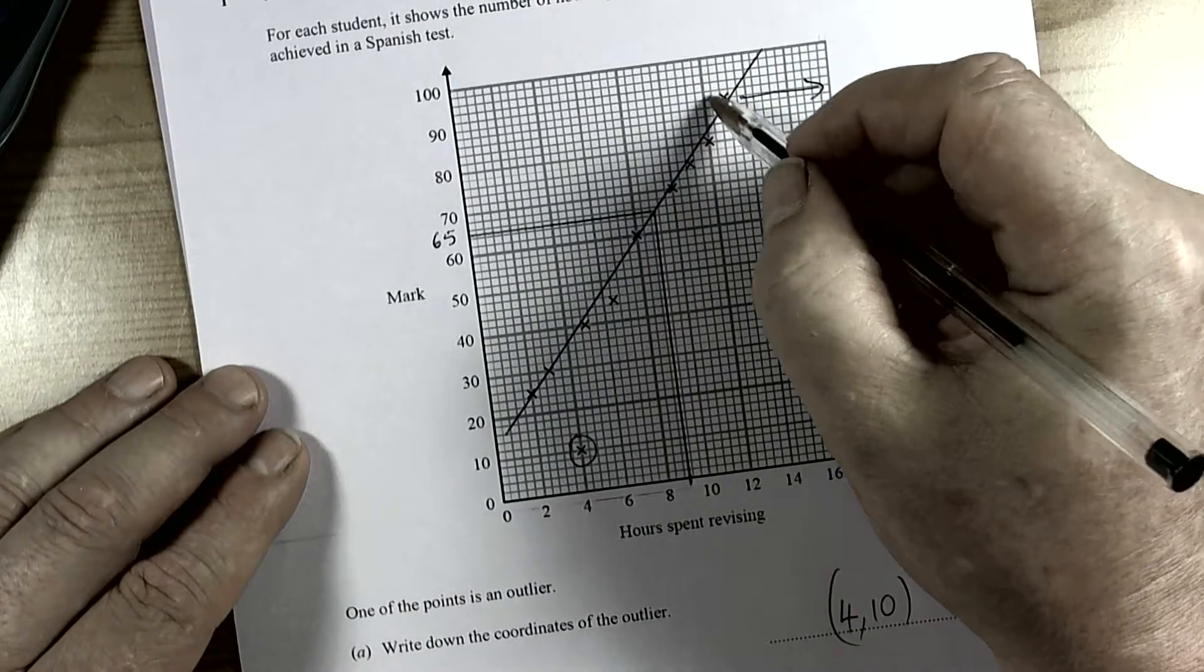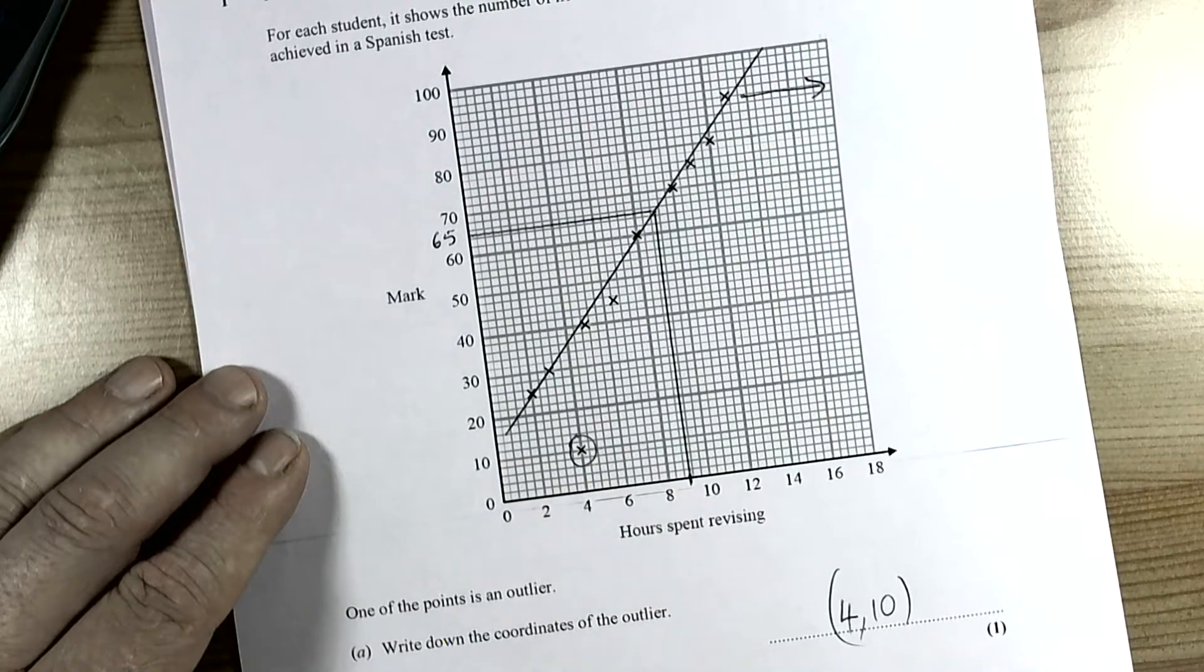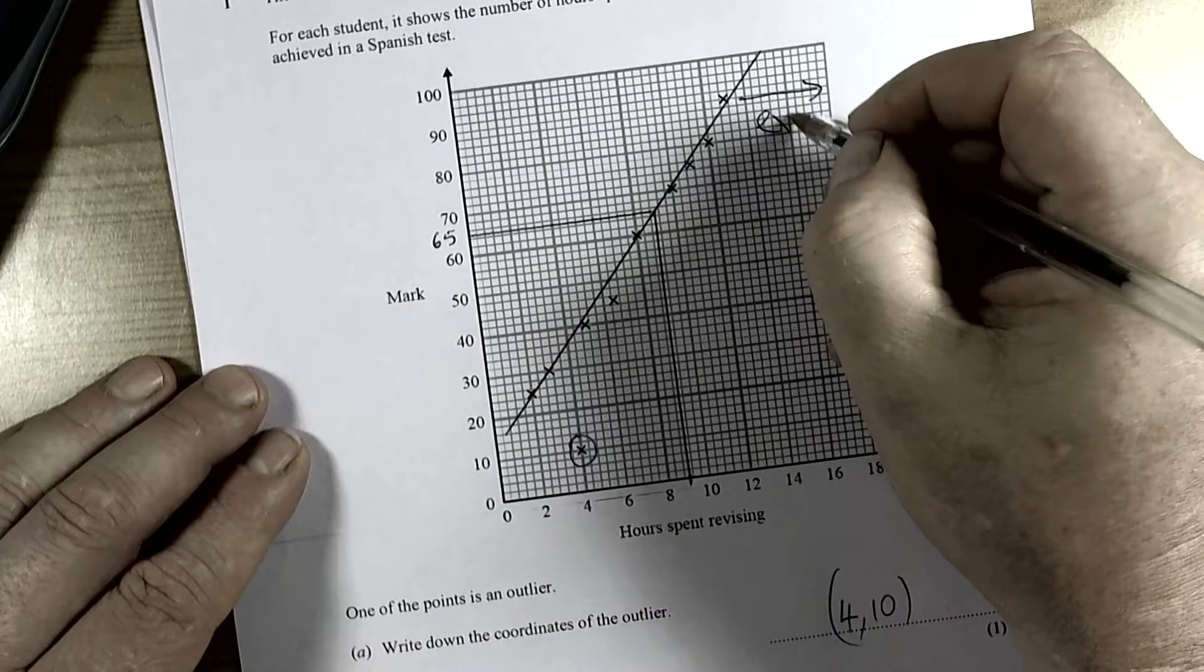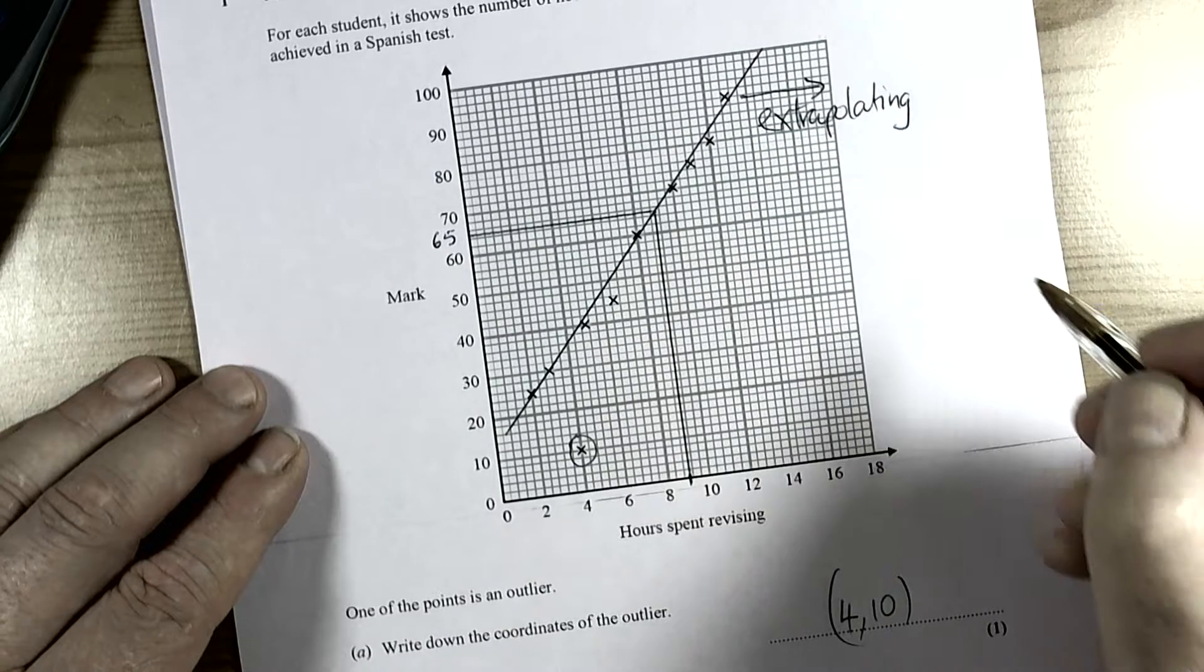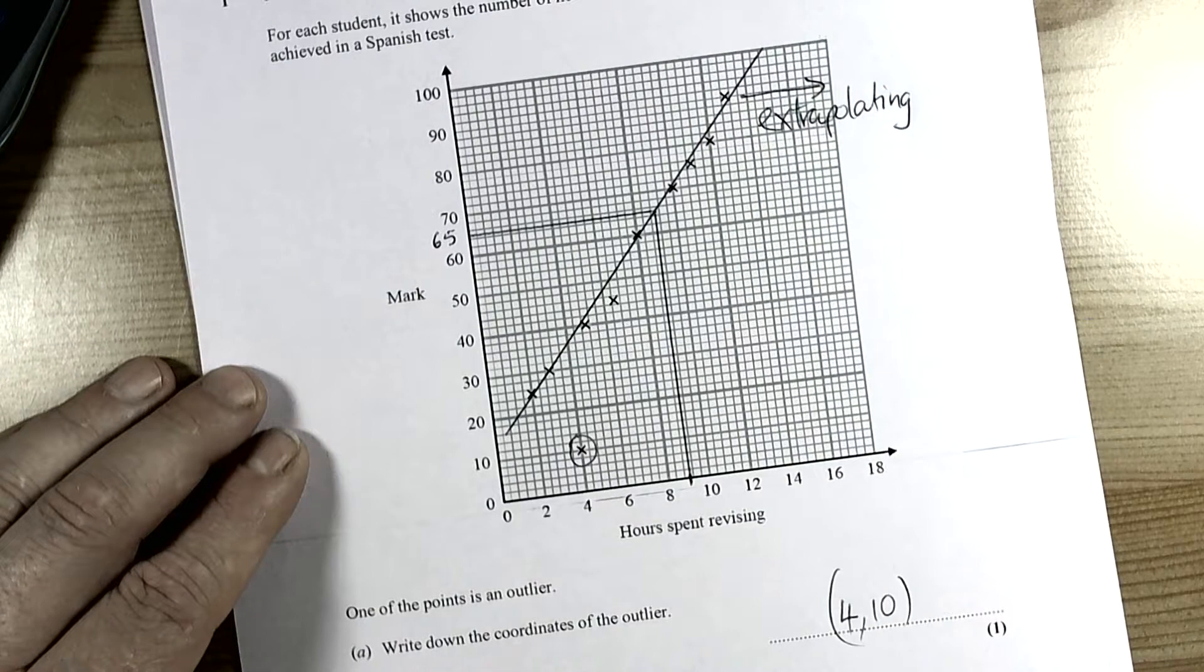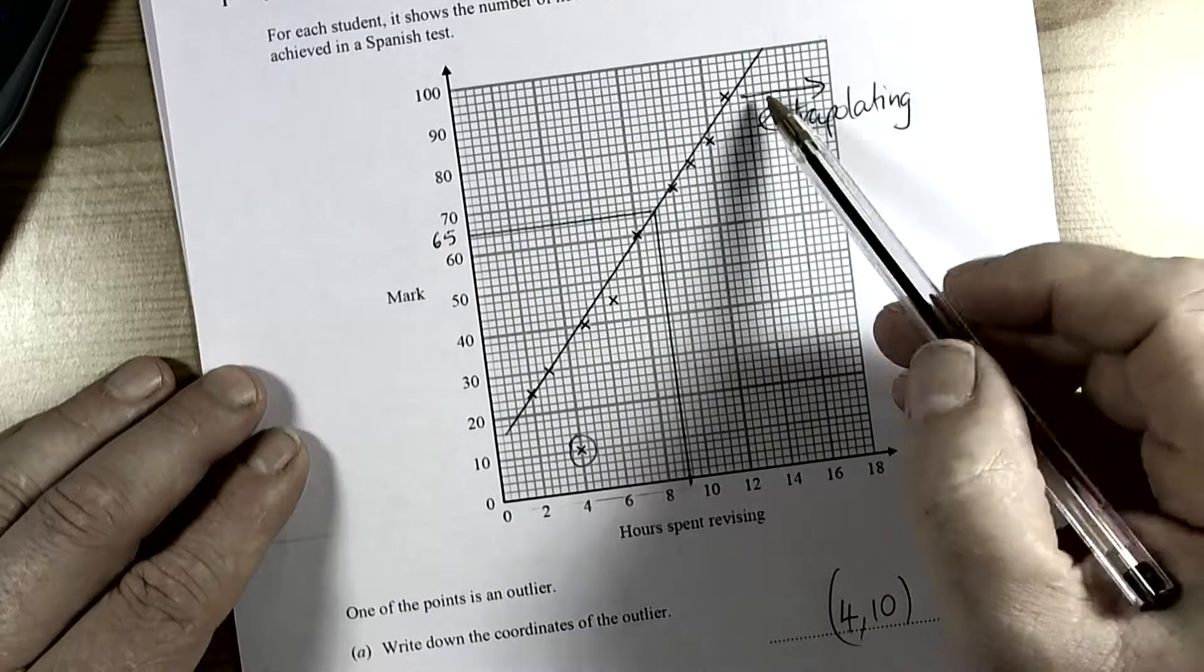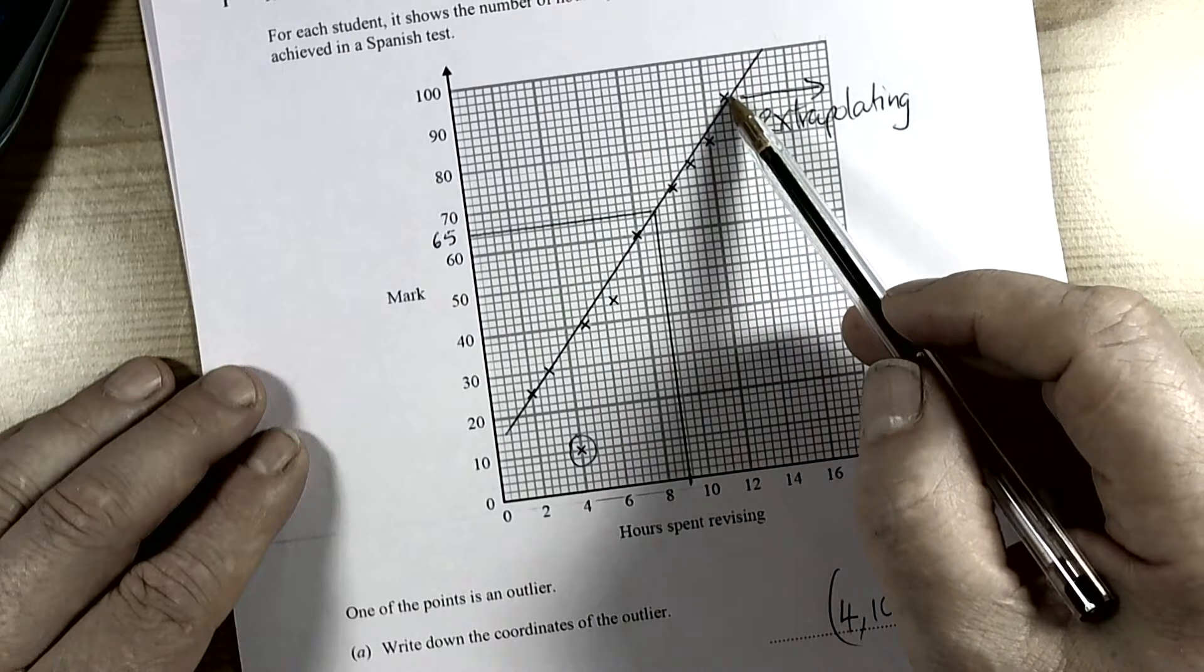Basically when we come beyond the known data, as in where the crosses stop, then we are extrapolating. In other words, where the crosses stop we are trying to estimate from unknown data. We don't actually know what's happening over here. That could be the highest mark students could get.